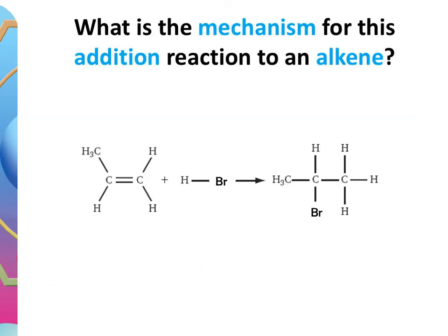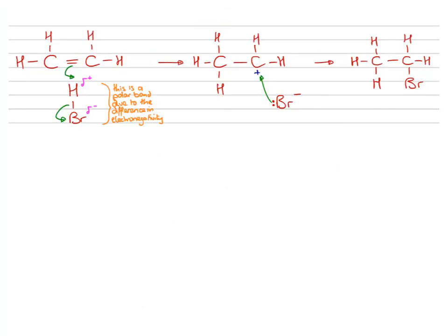We're going to consider first the mechanism for this addition reaction. Alkenes undergo addition reactions, meaning you don't get any other product — two species on the left, only one on the right. Here's the mechanism in its most simplified form using ethene. With hydrogen bromide, because hydrogen and bromine have different electronegativities, it's a polar molecule: the hydrogen is delta-positive and the bromine is delta-minus. When the hydrogen bromide comes in at the correct orientation, the reaction can take place.